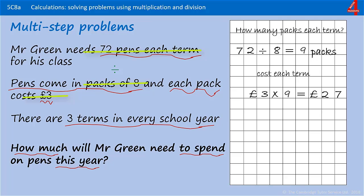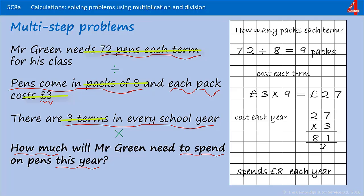But there are three terms in the school year and we've been asked to find out how much he spends in a year. If there are three terms in a year, we need to multiply three by 27 to find out how much he spends a year. 27 times by three, and the answer to that is 81. Mr Green spends 81 pounds each year on pens for his class.